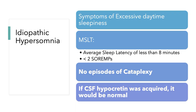Idiopathic hypersomnia also involves excessive daytime sleepiness. On the MSLT, average sleep latency is less than eight minutes, but you won't see the REM dissociative phenomena of narcolepsy — typically fewer than two sleep onset REM periods. There's no history of cataplexy, which is the most specific symptom for narcolepsy, and CSF hypocretin levels would be normal if a spinal tap were done.